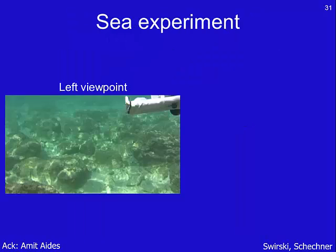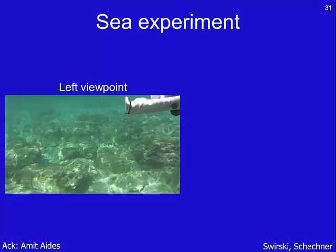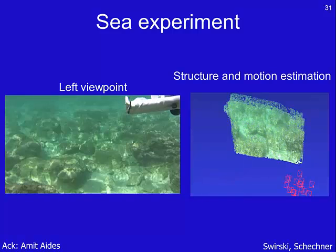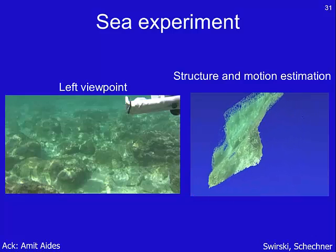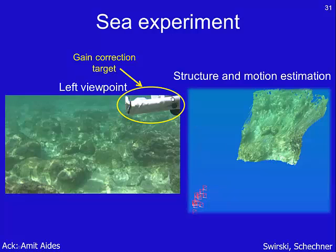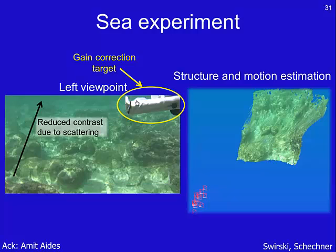The most challenging environment is in the sea, where the image suffers from strong scattering as well. This is the left viewpoint, and this is the 3D reconstruction of the sea floor. The obstacle in the corner of the image is used to correct the auto gain of the cameras for scattering correction. You may notice that the contrast of the image reduces as range increases, and the colors are distorted — the original colors of the rocks and sand vary between yellow and brown.